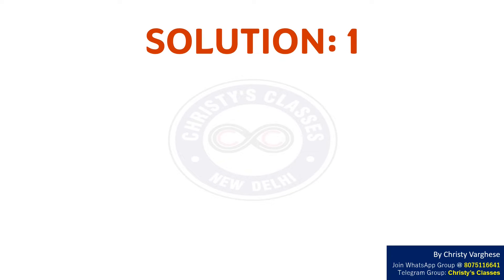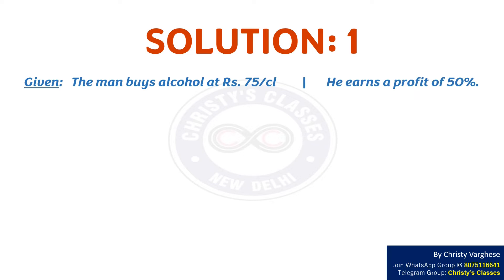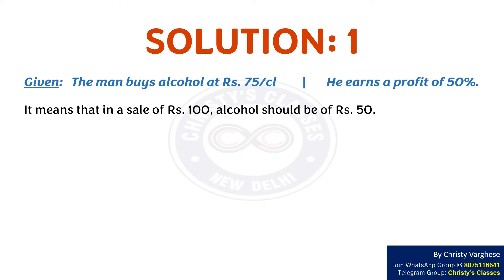Let us consider two solutions for this question. Solution 1: Given that the man buys alcohol at Rs. 75 per centiliter and he earns a profit of 50%, it means that in a sale of Rs. 100, alcohol should be of Rs. 50.